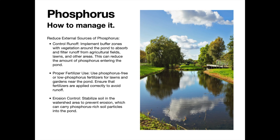If you have much phosphorus present and a chronic algae problem, that's going to be part of the story. To reduce or manage phosphorus in a pond, the first and best place to start is limiting the phosphorus that gets into the pond in the first place — and that means controlling runoff. You can create buffer zones and vegetative strips around the pond which can help absorb nutrients from runoff coming from fertilized ground.